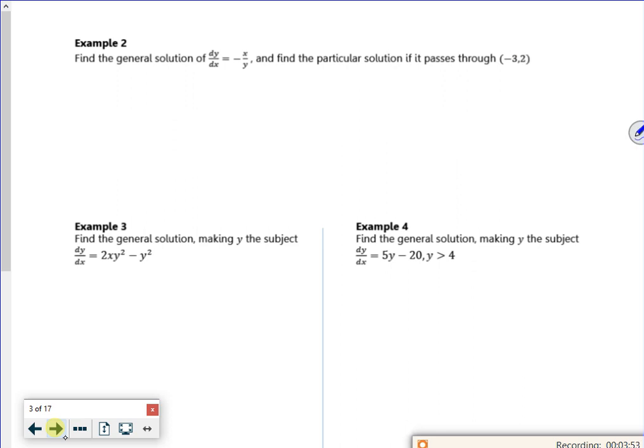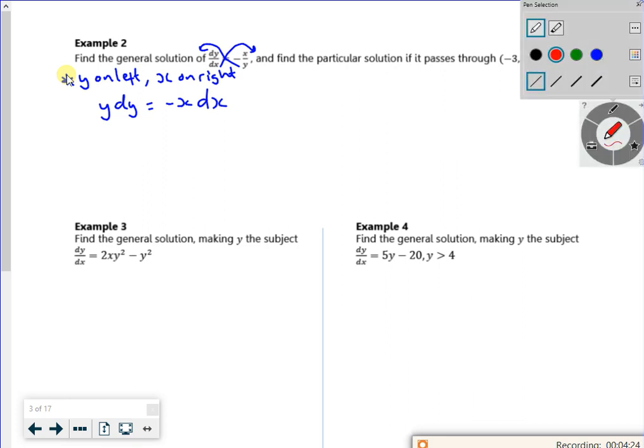Okay. So when I split it, I've got y on the left because that's on the top and x on the right because that's on the bottom. So I'm going to take the y up here and the dx over there. So I'm going to have y dy is minus x dx. So that's separating the variables, splitting up the letters.